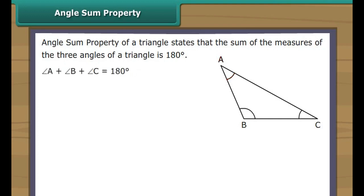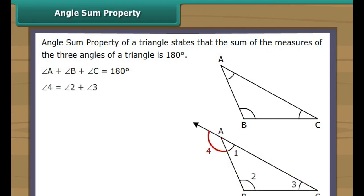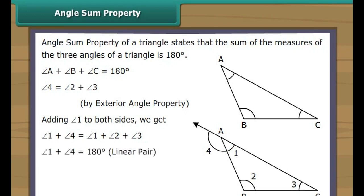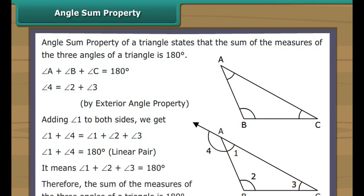In the figure, angle A plus angle B plus angle C is equal to 180 degrees. Let us now prove the angle sum property of a triangle. Extend angle BAC. Angle 4 is equal to angle 2 plus angle 3 by exterior angle property. Adding angle 1 to both sides, angle 1 plus angle 4 equals angle 1 plus angle 2 plus angle 3. Since angle 1 plus angle 4 equals 180 degrees (linear pair), angle 1 plus angle 2 plus angle 3 equals 180 degrees. Therefore, the sum of the three angles of a triangle is 180 degrees.